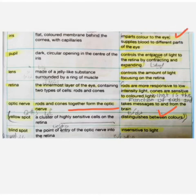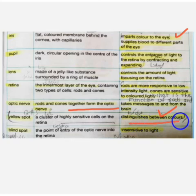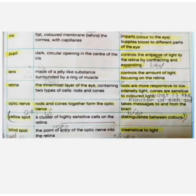The iris gives color to the eyes — it can be blue, brown, or other colors. The yellow spot distinguishes colors. The blind spot is insensitive to light. The vitreous and aqueous humor are also parts of the eye.